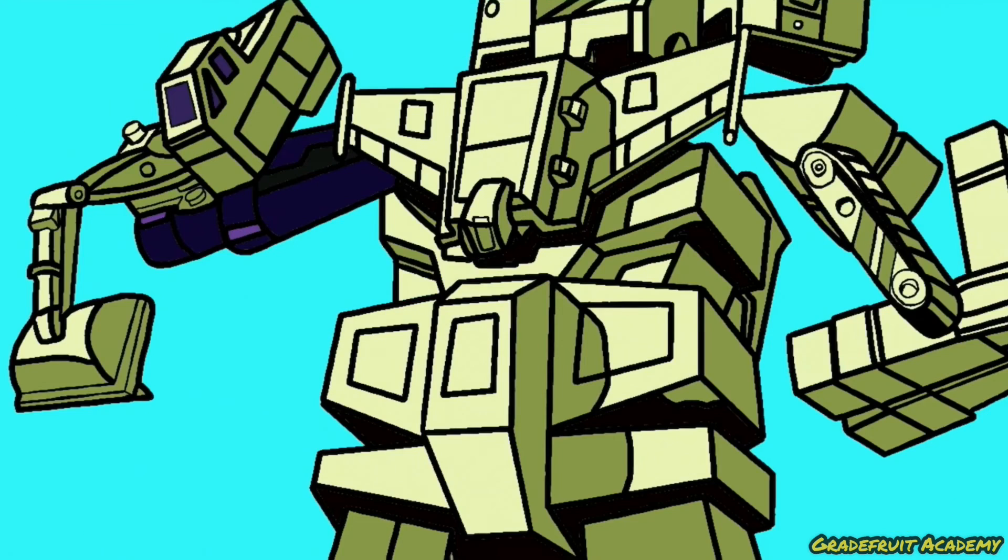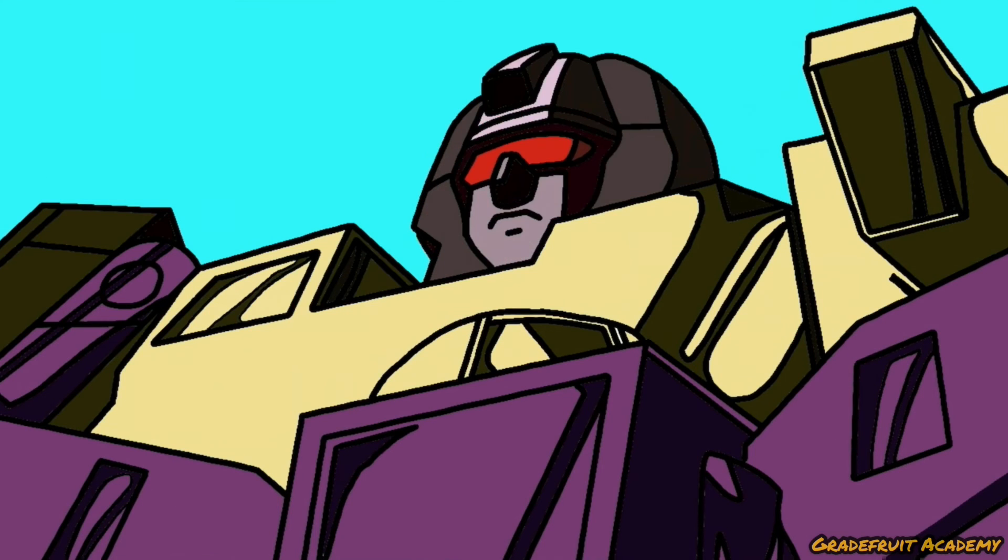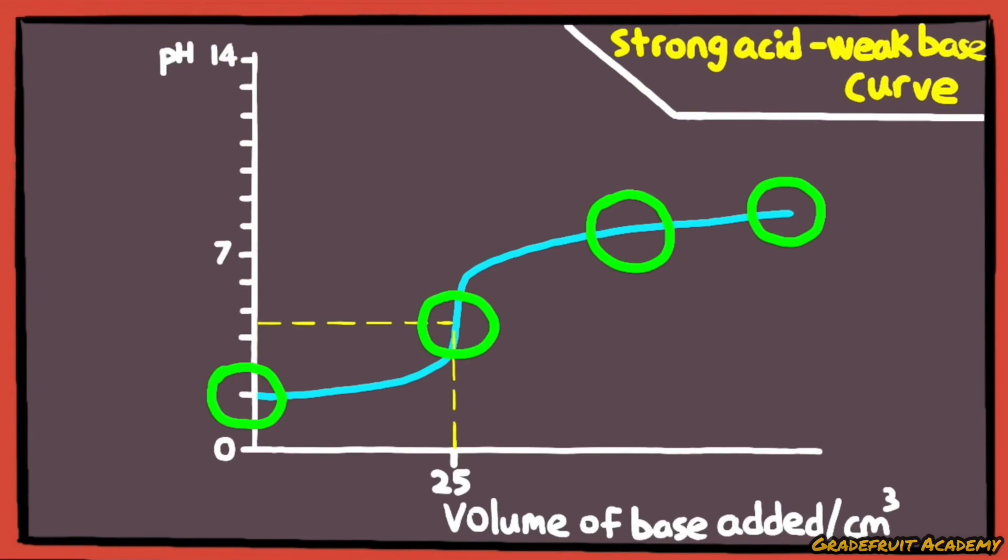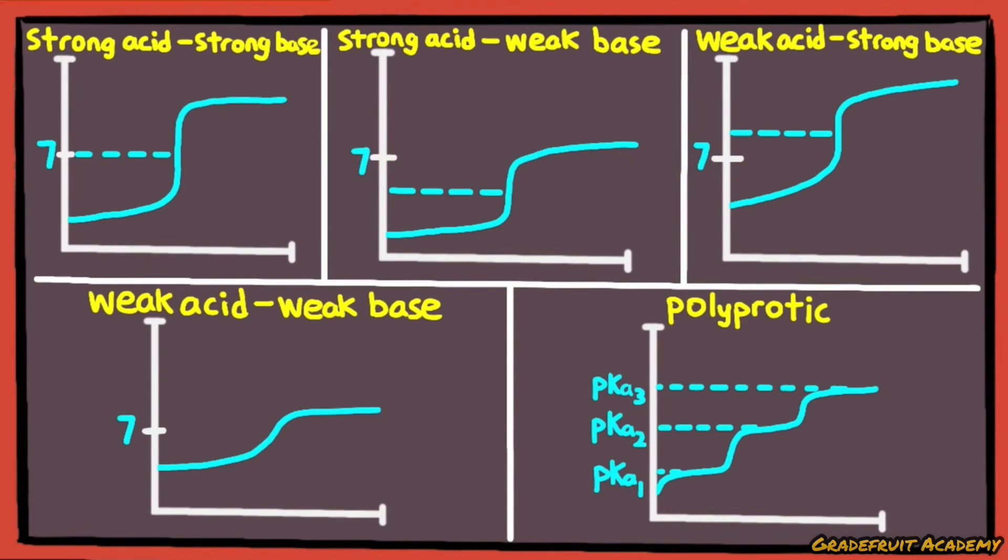Combining everything that we have covered so far, we can illustrate all the combinations of weak, strong, acid-base reactions with five types of acid-base titration curves. More importantly, we need to know how to calculate the pH at these four specific points of the titration curves, especially for these two curves with one of the species being either a weak acid or a weak base.